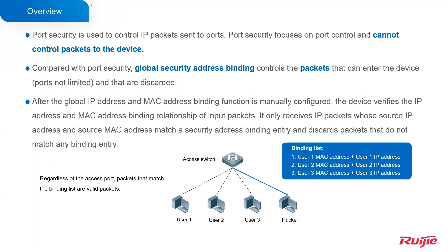Port security focuses on port control but cannot control packets sent to the device itself, because port security mainly focuses on interface control. For example, if we enable port security on two interfaces on the same switch, those interfaces are isolated, but it controls the interface, not the packets. Compared with port security, global security address binding ensures which packets can enter the device and which are discarded.